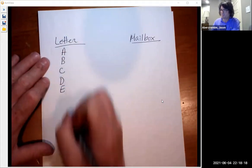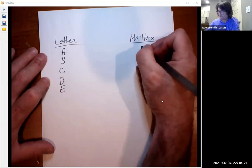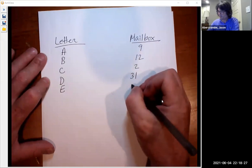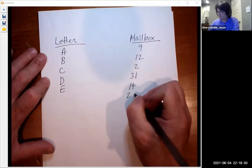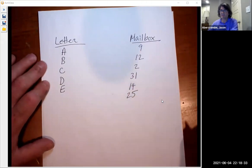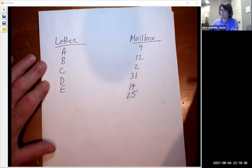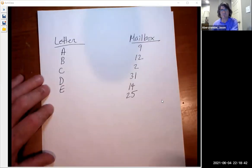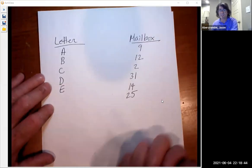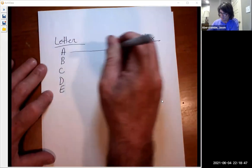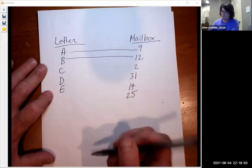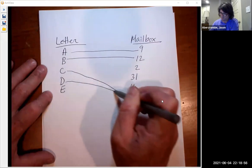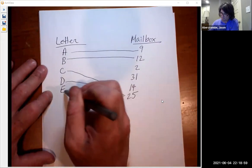Just keep it simple. A, B, C, D, E. And mailboxes will be nine, twelve, two, thirty-one, and fourteen, and twenty-five. And so the deal is that every letter, every input, has to have an output. That means every letter has to go somewhere, and that's true with letters. If you mail a letter, it's going to go somewhere. So maybe A goes to nine, and B goes to twelve, and C goes to mailbox twenty-five, and D goes to mailbox twenty-five also, and E goes to mailbox two.